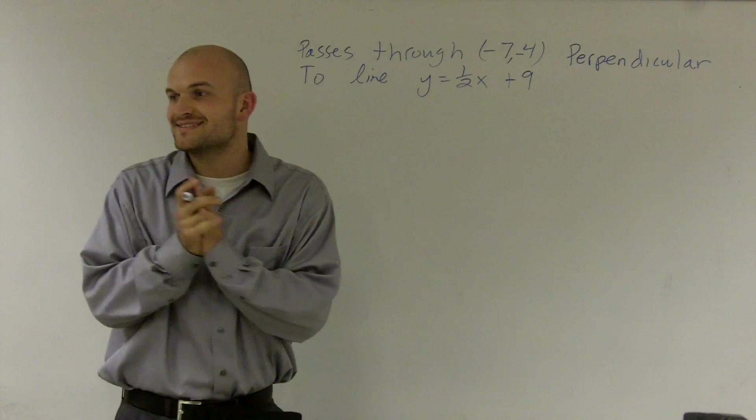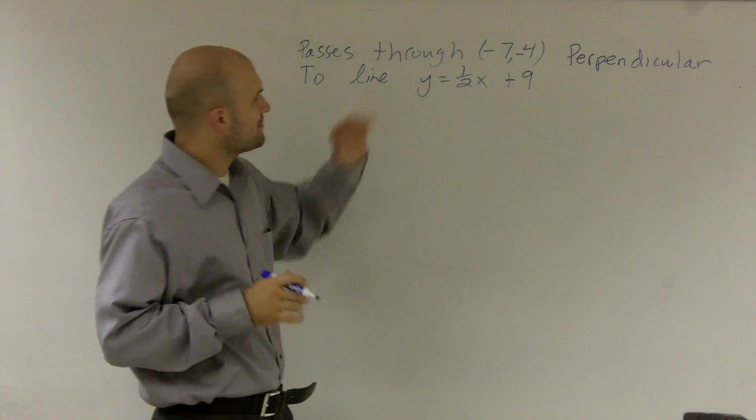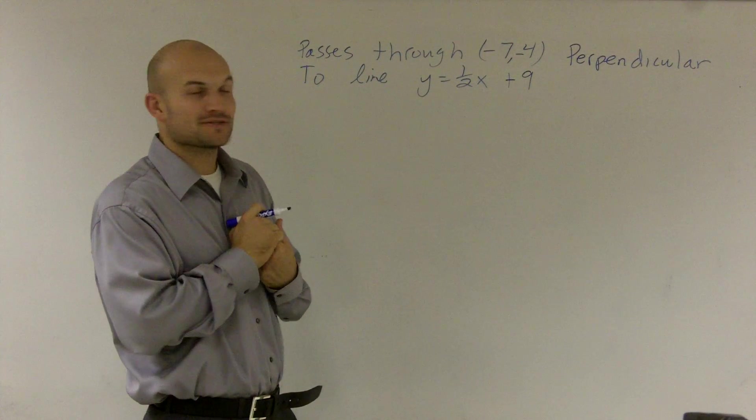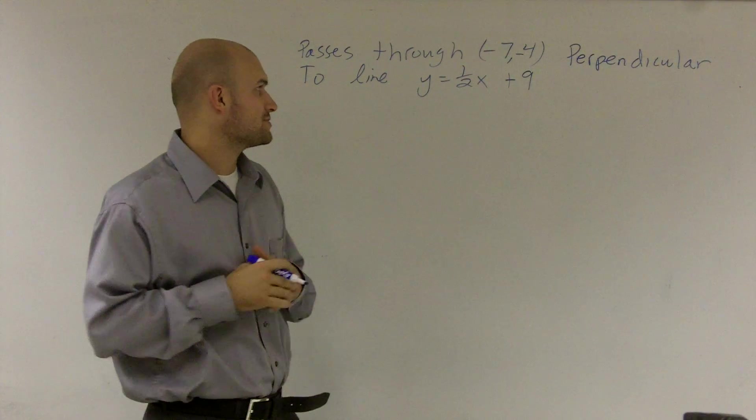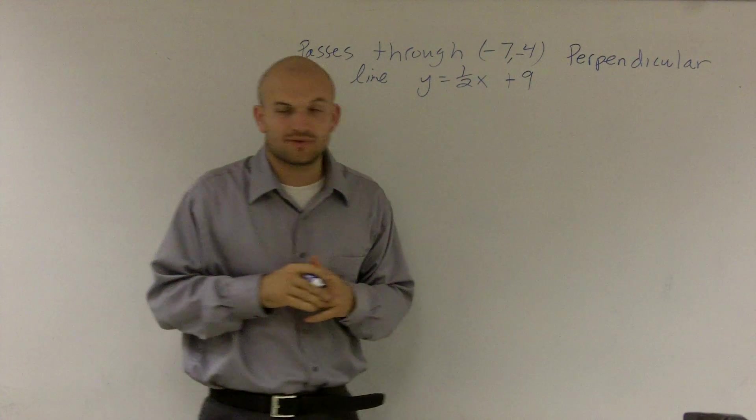OK, one of my favorite questions. We want to find a line that passes through the point negative 7 comma 4, but is perpendicular to the line y equals one half x plus 9.